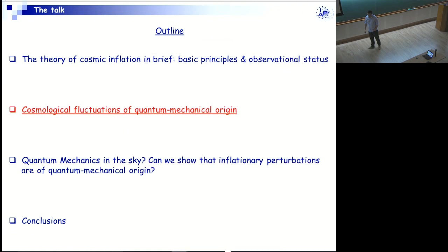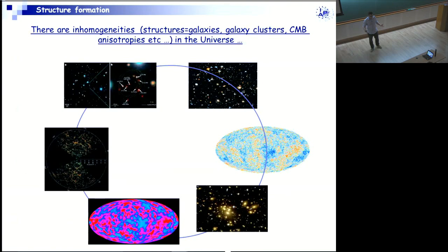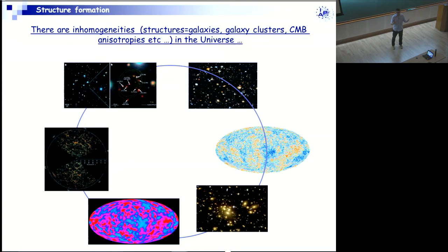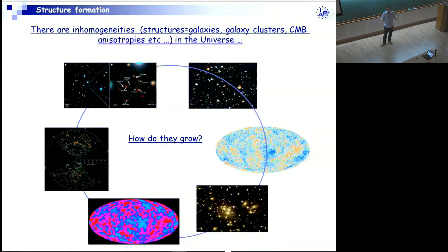Now I am going to describe the theory of cosmological or inflationary fluctuations of quantum mechanical origin. It starts from the fact that our universe is not homogeneous and not isotropic — it's obvious when we look at the sky, we see galaxies, clusters of galaxies. When we look at the last scattering surface, the surface at which the CMB was produced, we see temperature anisotropies. Given this observational fact, we can ask two questions: how do they grow, and what is their origin?